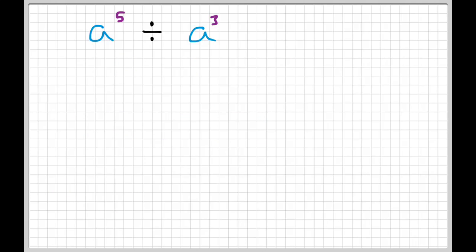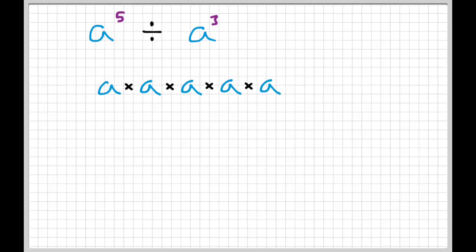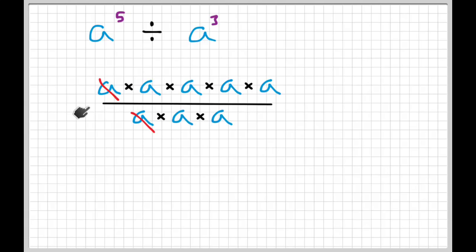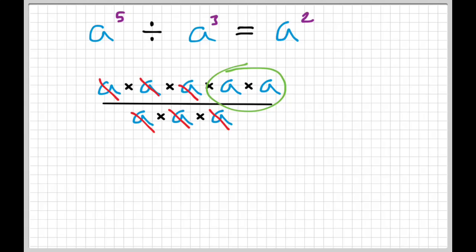Let's look at one more scenario. What if we had a to the fifth divided by a cubed? What we've really got is a times a times a times a times a — five a's — divided by three a's: a times a times a. When you have the same thing on the top as on the bottom, we can cancel them. We cancel out three a's, and all we have left is two on the top. So this equals a to the second — a squared — which brings us to index law number two.